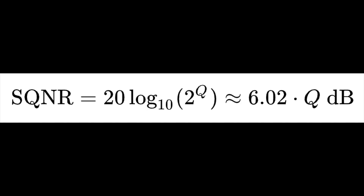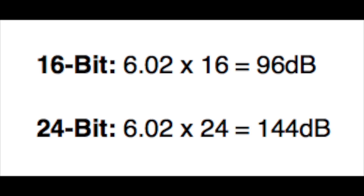The equation on your screen is going to provide us the signal to quantization noise ratio, or dynamic range in decibels. So if we use the latter half of the equation, we get an approximation of this value — we're going to multiply 6.02 by Q, Q being your recording bit depth. When we throw 16 bit in here, we get a dynamic range or SQNR of 96 decibels. And for 24 bit audio, we're getting a dynamic range or signal to quantization noise ratio of 144 decibels.